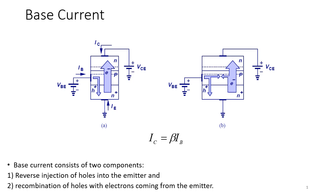Now that we've learned about the collector current, let's learn about the base current and the emitter current. The base current is made of two different components. The first is the reverse injection of holes into the emitter. We have electrons going from emitter to base, but a smaller flow of holes going from base to emitter — the ratio is around 100, since the emitter doping level is about 100 times bigger than the base.